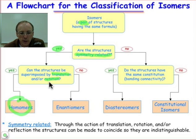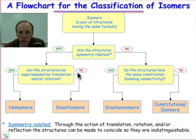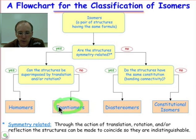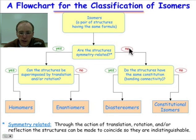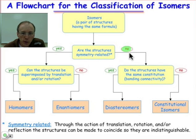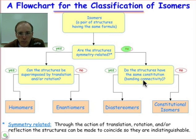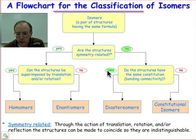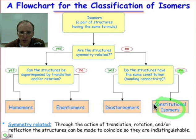If it turns out that these structures are related not by a rotation and a translation, but requires a reflection, those molecules — that pair of isomers — are enantiomers. Back up to the top: if we had answered that first question no, the molecules are not symmetry related — nothing I can do, no symmetry operation of translation, rotation, or reflection can make one molecule superimpose on the other — then I need to ask the next question: do they have the same bonding connectivity? If yes, we conclude they're diastereomers. If no, we conclude they're constitutional isomers.